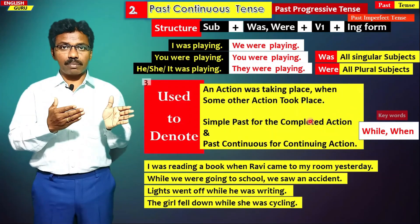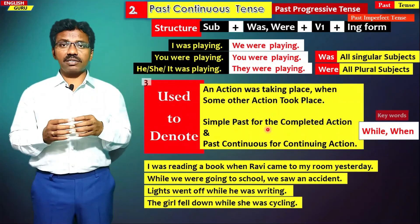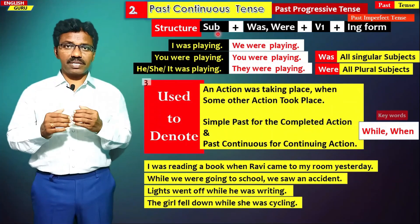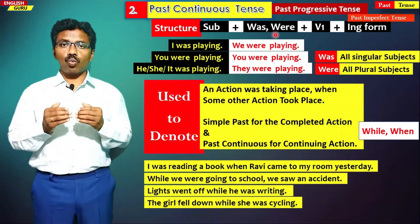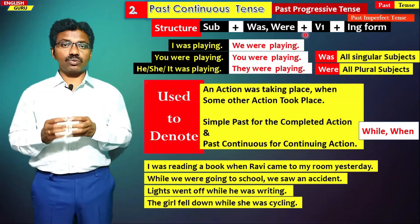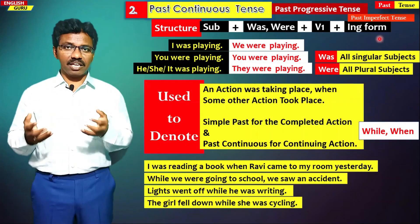So past continuous tense is used for all ongoing actions in the past — for some time or a fixed time. The structure of a sentence in past continuous tense is: subject plus was or were plus verb 1 plus ing form.